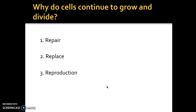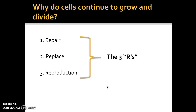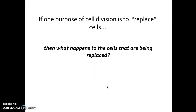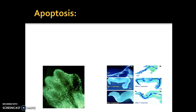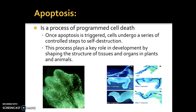Your book talks about this process as the three R's. One of the purposes is to repair and/or replace cells. When cells are being replaced, there is a process in biology called apoptosis. It's a process where a cell can break itself down — it's a process of programmed cell death. When a signal is triggered in your body and a cell becomes stressed, that cell undergoes a series of controlled steps to self-destruct.